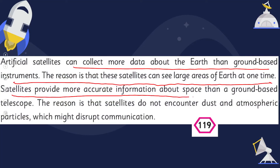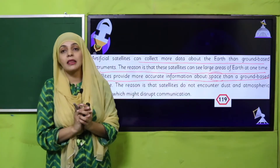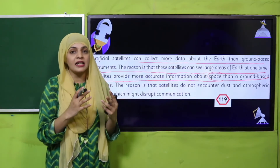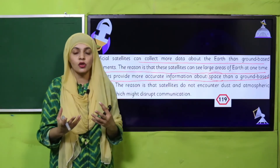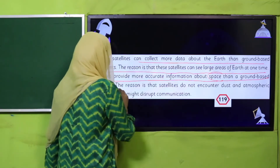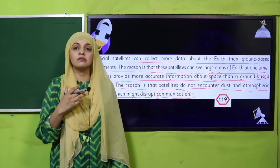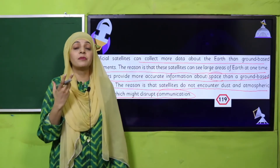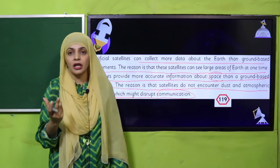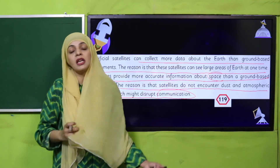Satellites provide more accurate information about space than ground-based telescopes. The data collected from a ground-based telescope is not so accurate. The reason is that satellites do not encounter dust and atmospheric particles which might disrupt communication. Because in space there is no water, no gravity, no dust particles, so there is no interruption and data is very accurately collected.